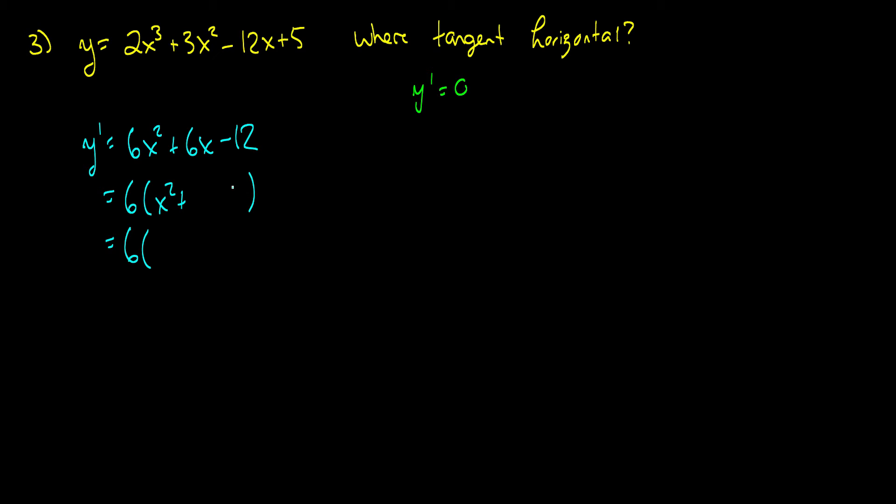Actually, I screwed this up. x squared plus x minus 2. That explains why I can't factor it in my head. And this becomes 6 times x plus 2 times x minus 1. Therefore, x is equal to 1 and negative 2.